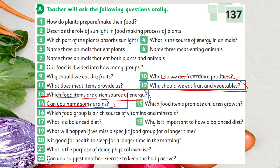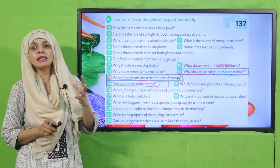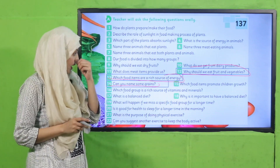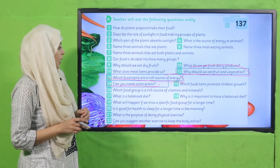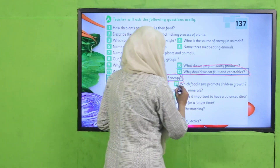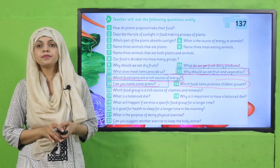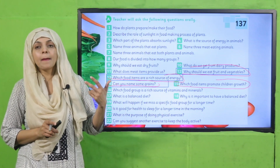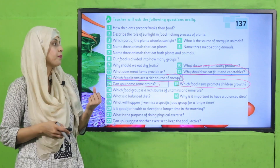Can you name some grains? Wheat, barley and rice — these are grains which are very good and rich in carbohydrates. Which food items promote children's growth? Egg, cheese, milk, butter and meat — these promote growth in children.